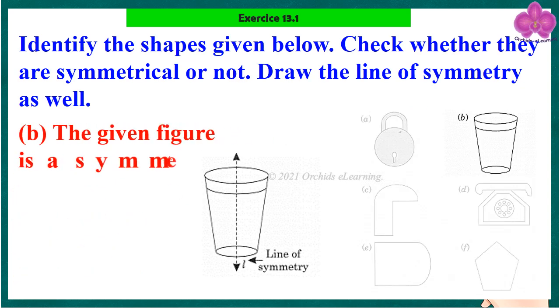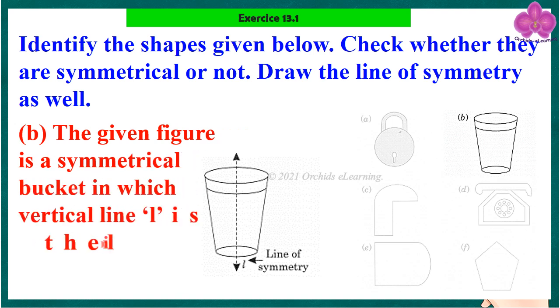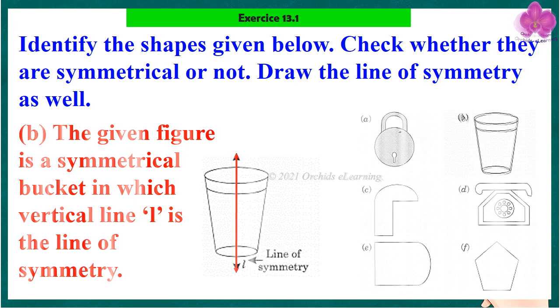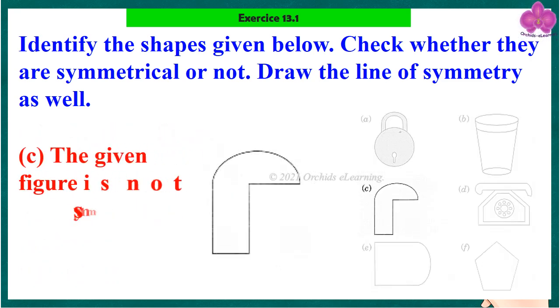The given figure is a symmetrical bucket in which vertical line L is the line of symmetry. The given figure is not symmetrical.